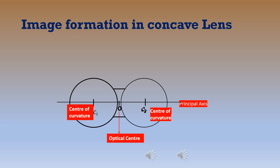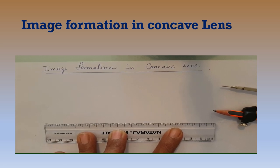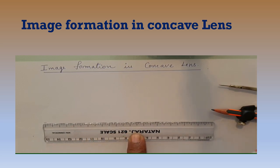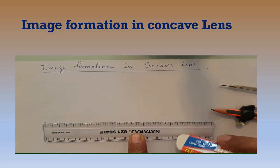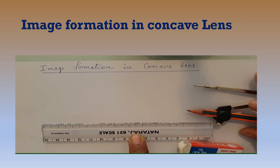Now we can watch a video which explains how to draw the ray diagram showing the image formation in concave lens. Today we learn about image formation in concave lens. For that, we need a scale, an eraser, a compass with sharp pencil, and another sharp pencil.